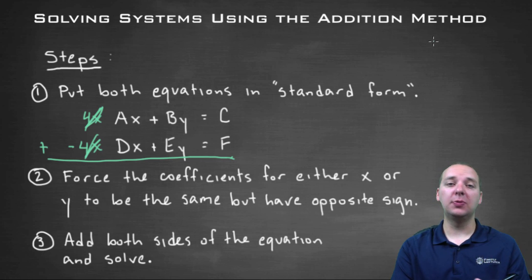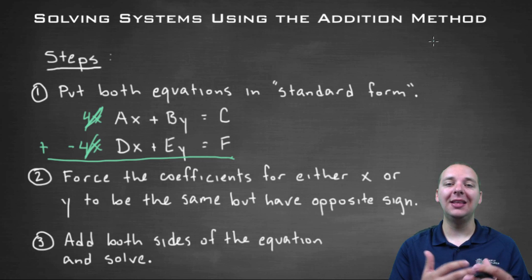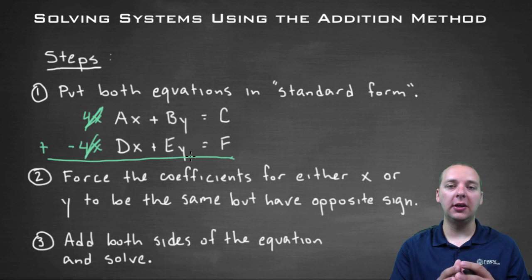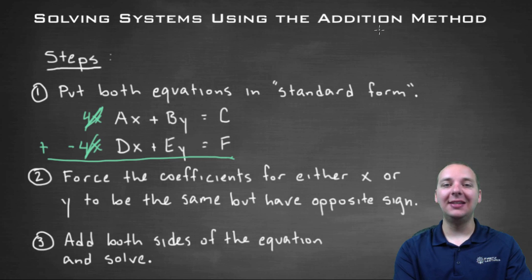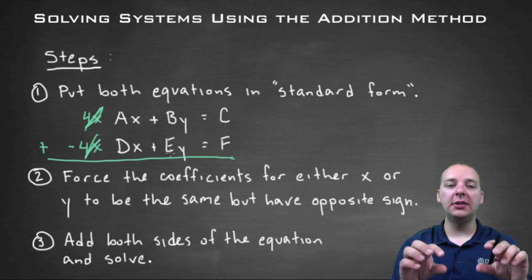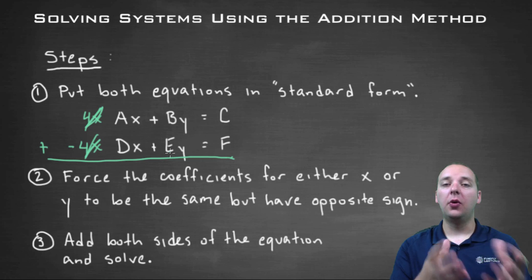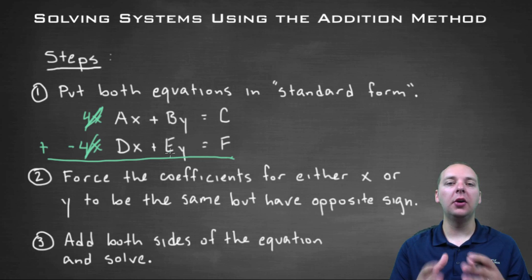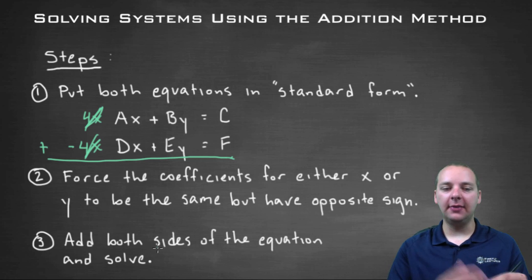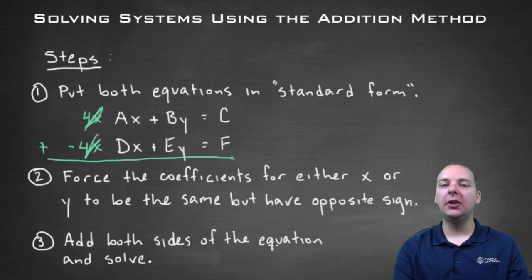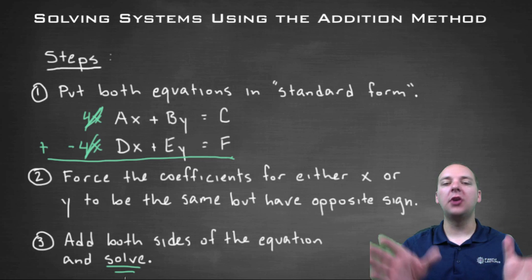This method actually goes by a few different names. Many people call it the addition method, but some textbooks will call it the elimination method — because you're eliminating either the x's or the y's. So if you're used to calling it the elimination method, that's totally fine and totally normal. I just happen to write it as the addition method for this video. Once that's done, you're going to get an equation that only has one variable, and then just finish solving it out.